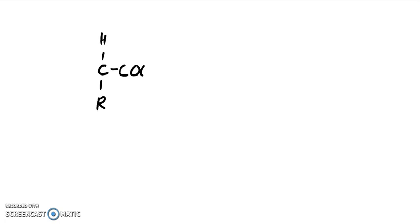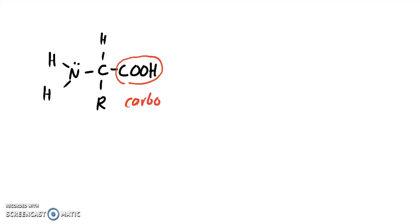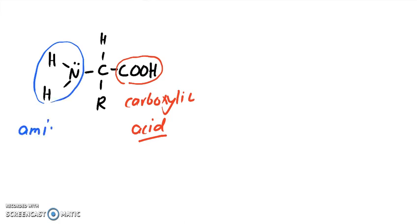Let me remind you what an amino acid looks like. Here's that variable group, here is that carboxylic acid part, and here is the amino group. So this is the carboxylic acid group — this is where the acid part comes from — and this is the amino group. Put these together and this gives you that name: amino acid.